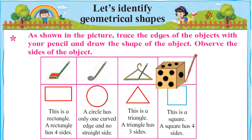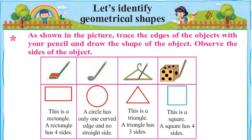Ab dekhte hain last picture — yeh hai dice ki picture yaani paase ki picture. Iske edges yaani kinaaron par pencil pherne par aapko is tarah ki shakal banti nazar aayegi. This is a square — is shape ka naam square hai, ise Urdu mein Murabba kehte hain. A square has four sides. Square ko bhi four sides hote hain yaani chaar baazu hote hain. Yeh hain square ke four sides.